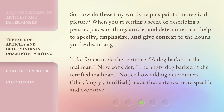So how do these tiny words help us paint a more vivid picture? When you're setting a scene or describing a person, place, or thing, articles and determiners can help to specify, emphasize, and give context to the nouns you're discussing. Take, for example, the sentence: a dog barked at the mailman. Now consider: the angry dog barked at the terrified mailman. Notice how adding determiners — the angry, terrified — made the sentence more specific and evocative.